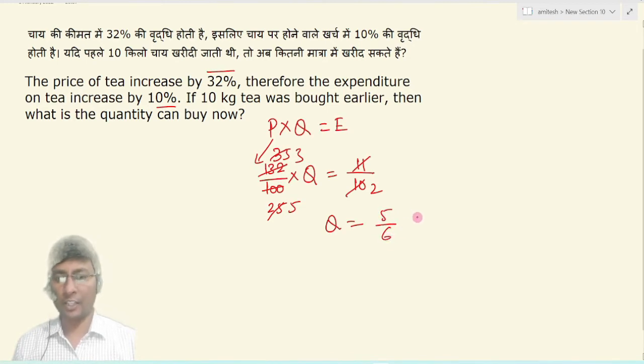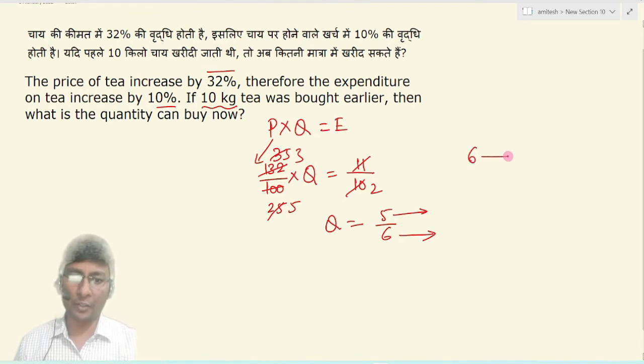It means agar pahle aap 6 unit kharidte thay to aap 5 unit khariid paoge. So initially 10 kg aap khariid rahe the hai, to 6 ka value 10 hai, to 1 ka value kitna ho jayega? 10 upon 6, to 5 ka value?